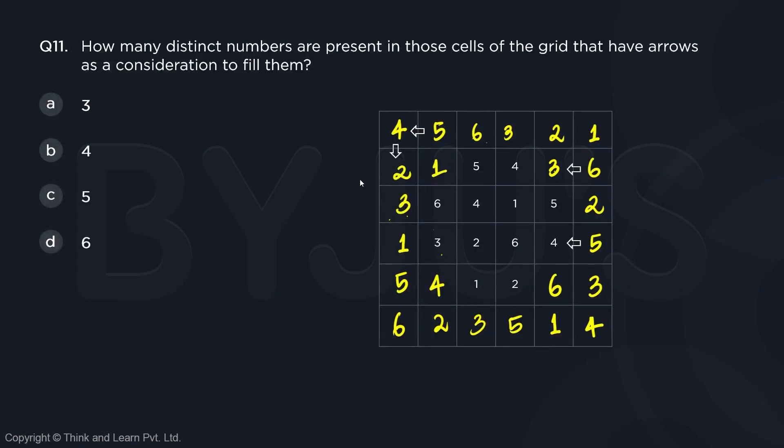Question number 11. How many distinct numbers are present in those cells of the grid that have arrows as a consideration to fill them?